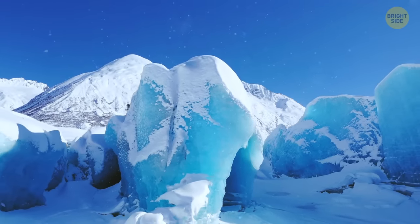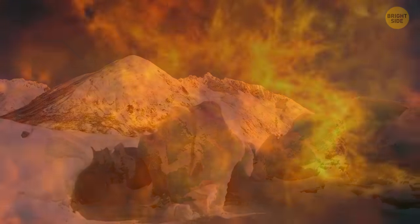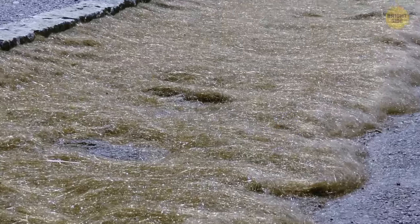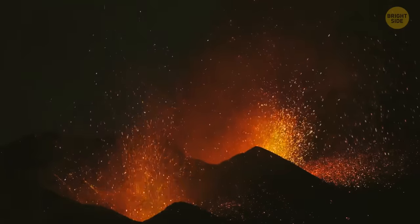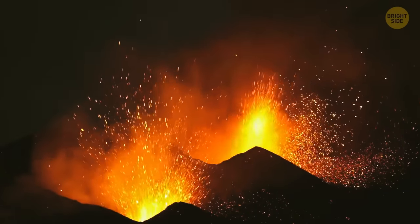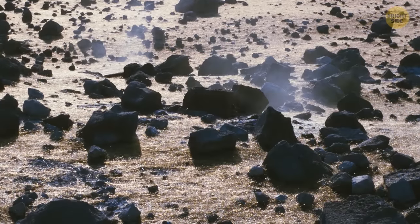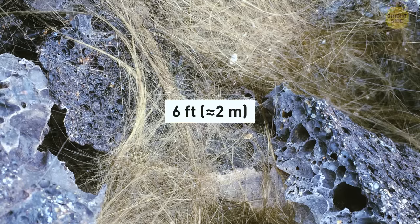But it's not only ice that creates amazingly beautiful things — fire can do it too. Look at Pele's hair. These thin threads may look golden and pretty, but they're very dangerous to pick up. The wind sometimes catches small droplets of lava coming from active volcanoes. These droplets get carried miles away from the vent and are stretched into super-thin glass wires, also called hair lava. Some strands can be as long as six feet.